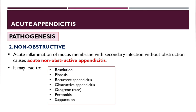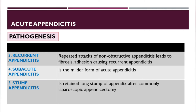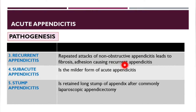Recurrent appendicitis involves repeated attacks of non-obstructive appendicitis leading to fibrosis and adhesions. Subacute appendicitis is the milder form of acute appendicitis. Stump appendicitis occurs when the remaining stump after surgery undergoes inflammation again.